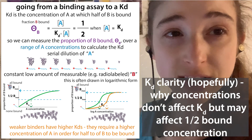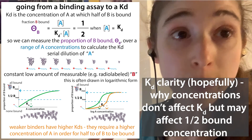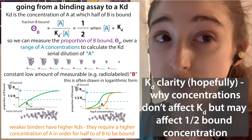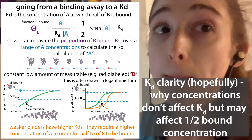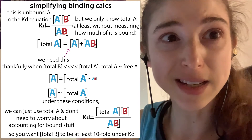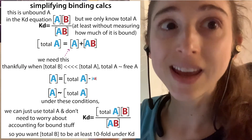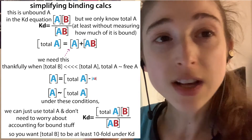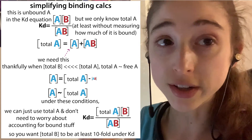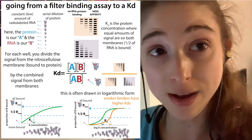Kd, or the dissociation constant, is a measure of binding affinity, and it does not depend on the concentration. But the value at which half of something is bound to a partner can depend on the concentration. So we often talk about Kd as the concentration of one binding partner at which half the other partner is bound.